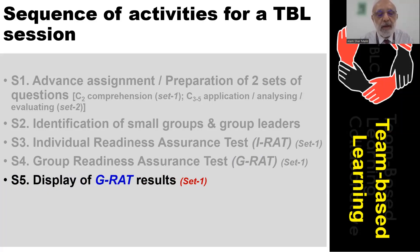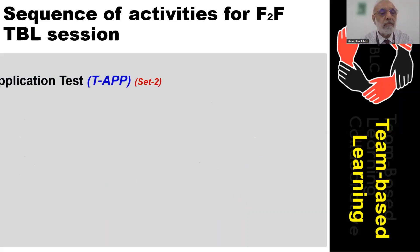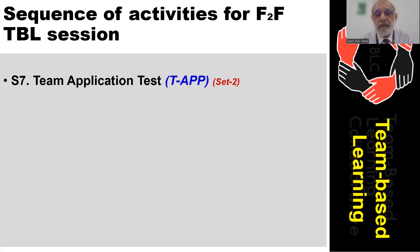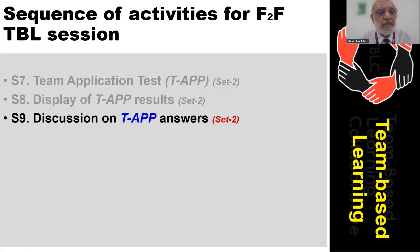Step five: display of group readiness assurance test results. Step six: teacher clarification and review of the group readiness assurance test results, question by question. Step seven: the team application test using the second set of questions, leveled at application and evaluation according to Bloom's taxonomy. Step eight: display of team application test results. Step nine: discussion on team application test results and their answers, one by one.